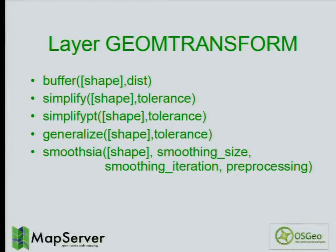Regarding the GeomeTransform at the layer level, we've added Smooth SIA plus support for buffer, simplify, simplify with topology preserve, and a generalize operator. Those are the ones available right now. Buffer and simplify use GEOS; generalize uses a simpler built-in function.